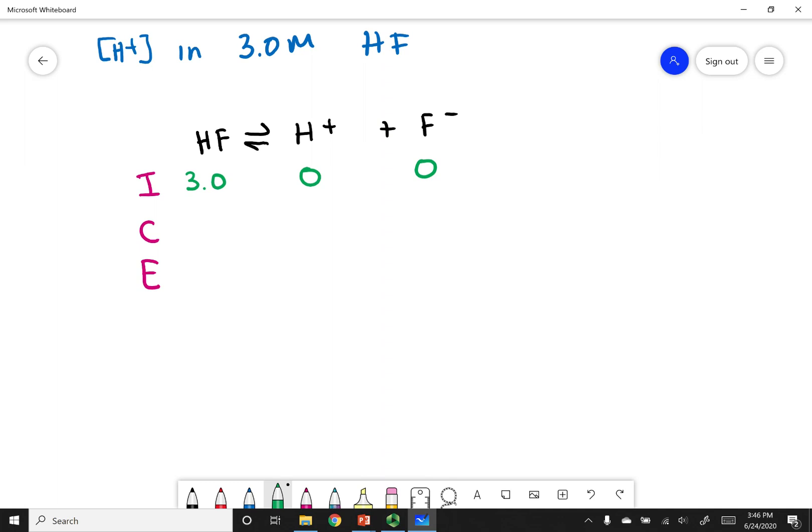Now we can fill out our change row. Since I have 0 products, I know these are going to be positive changes, and my HF is going to be a negative change because I'm going to break that HF into these parts. Everything is in a 1-to-1 ratio, so X is across the board. Finally, we can do E, which is I plus C.